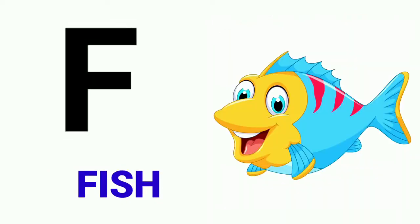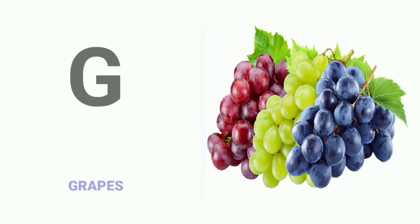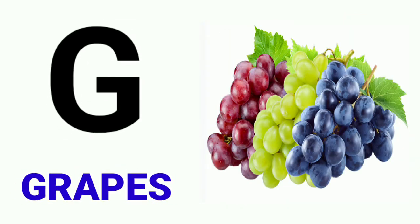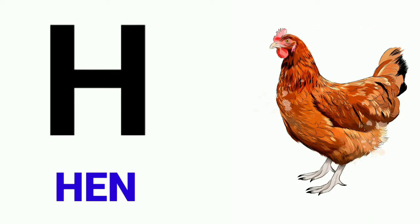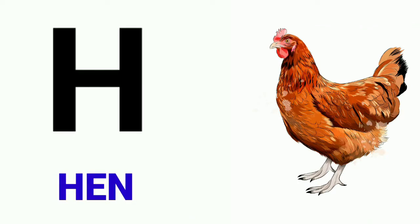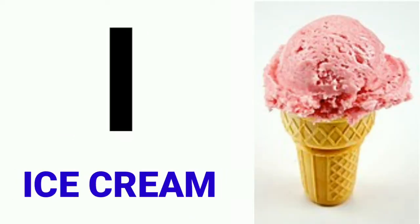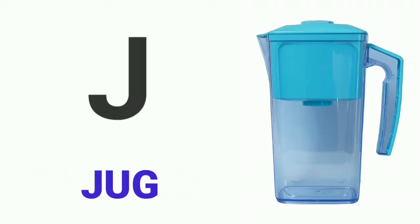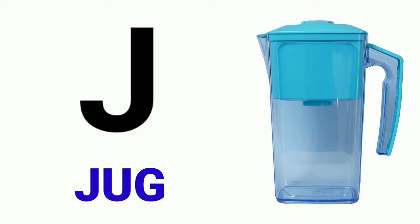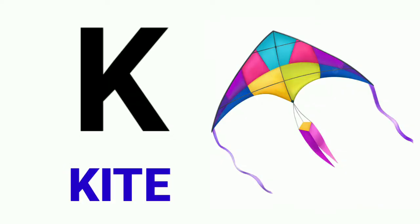F for fish, G for crabs, H for hen, I for ice cream, J for jug, K for kite.